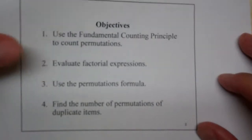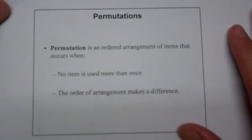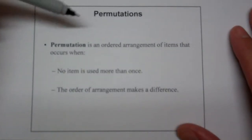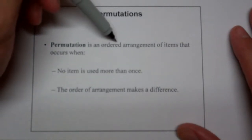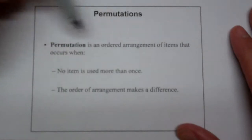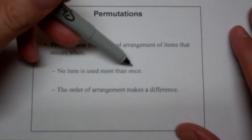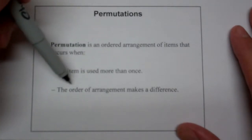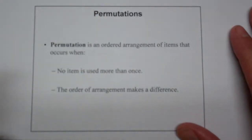Let's first go ahead and define what a permutation is. A permutation is an ordered arrangement of items that occurs when no item is used more than once, and when it is we have to take that into account. And the order of the arrangement makes a difference.